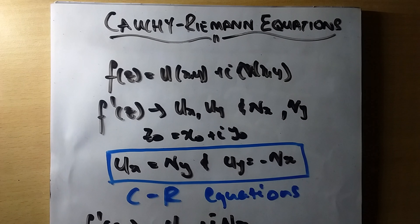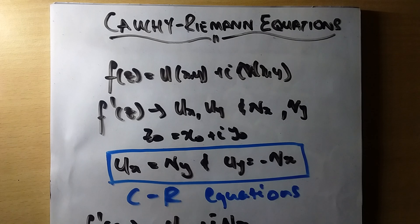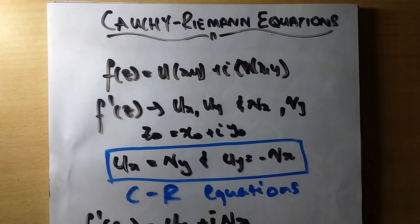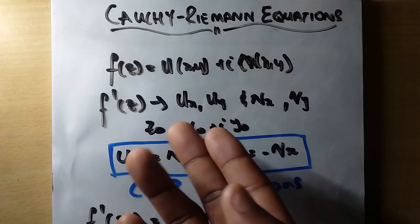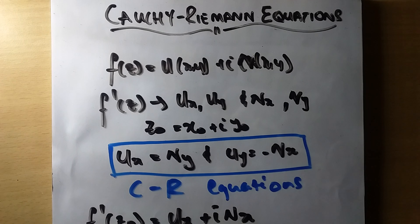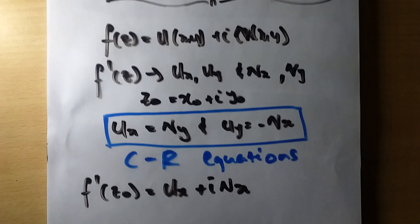Welcome to another session, a continuation of the Cauchy-Riemann equations. Today we will continue, but with a little tweak. When we introduced the Cauchy-Riemann equations, we only spoke about the existence of the first-order partial derivatives everywhere. Today we will speak about differentiability, or the sufficient conditions for differentiability.